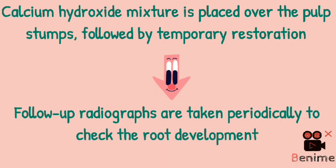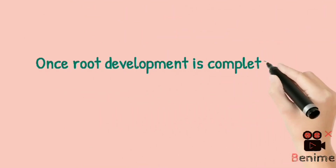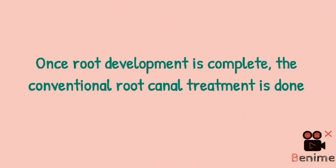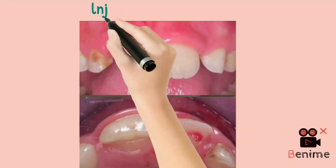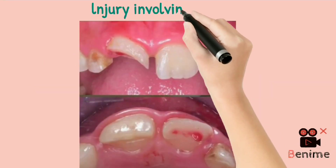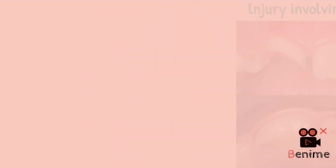Once the root development is complete radiographically, then do conventional root canal treatment and give a final restoration. Here is a case presenting Class 3 trauma where apexogenesis has been performed.